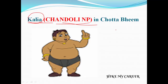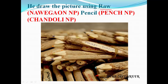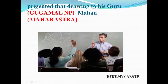So he draws the picture using a raw pencil. Raw means Navgwan National Park, and Pencil means Pench National Park. Next, he presented the gift to his guru — guru name is Magan. Guru is Gugamal National Park.